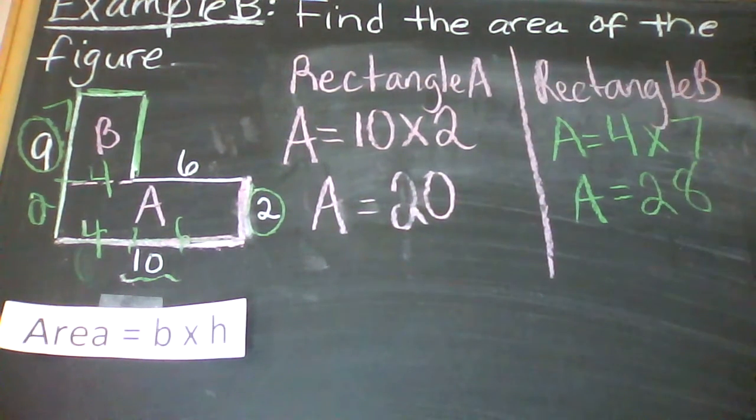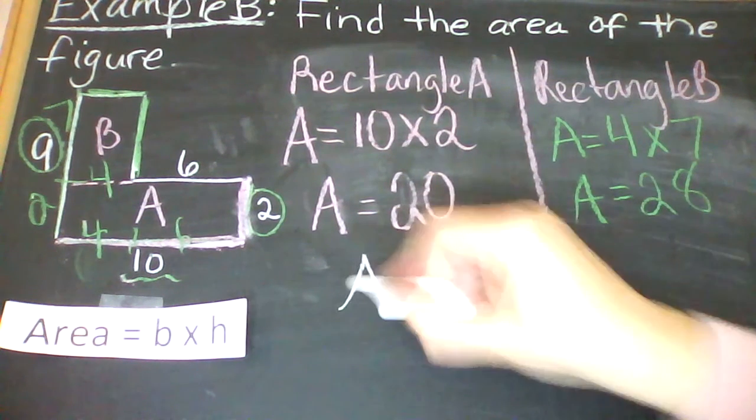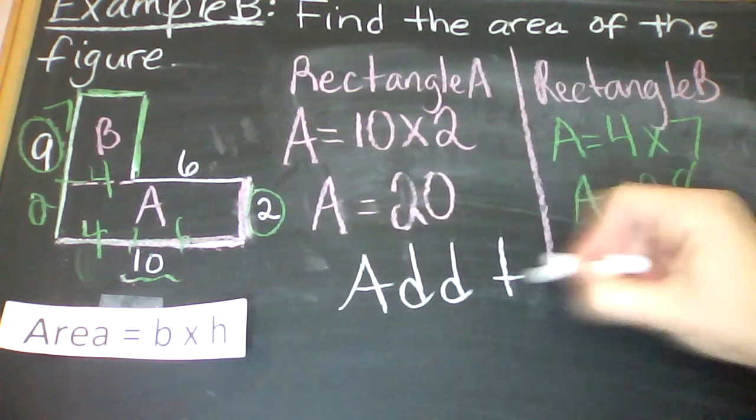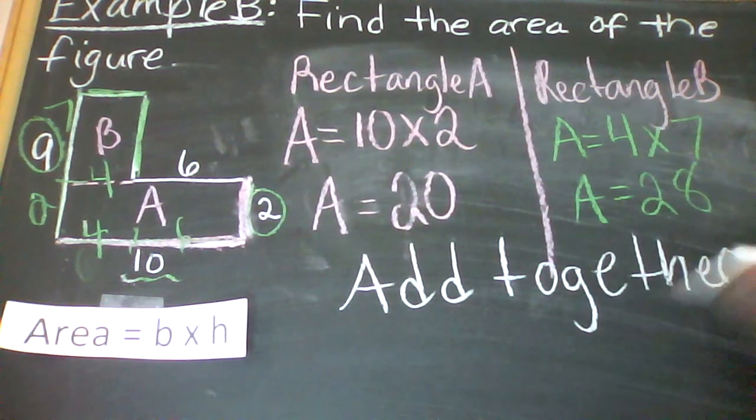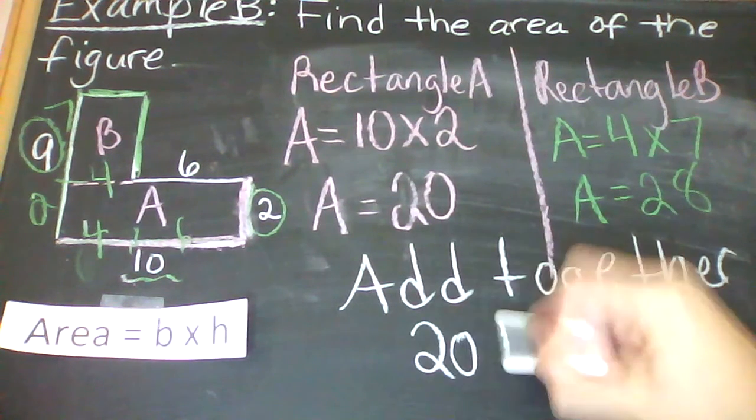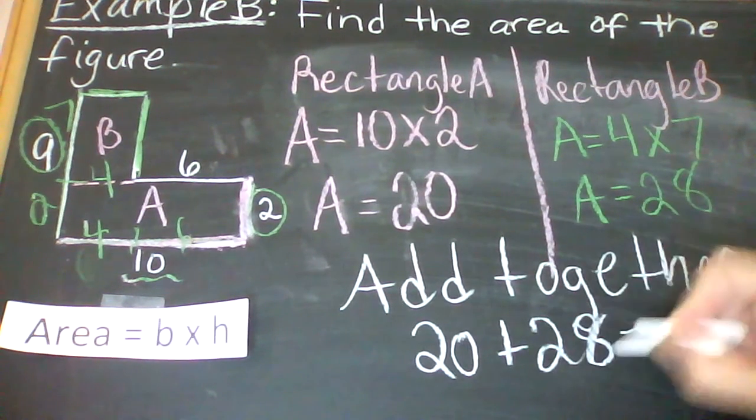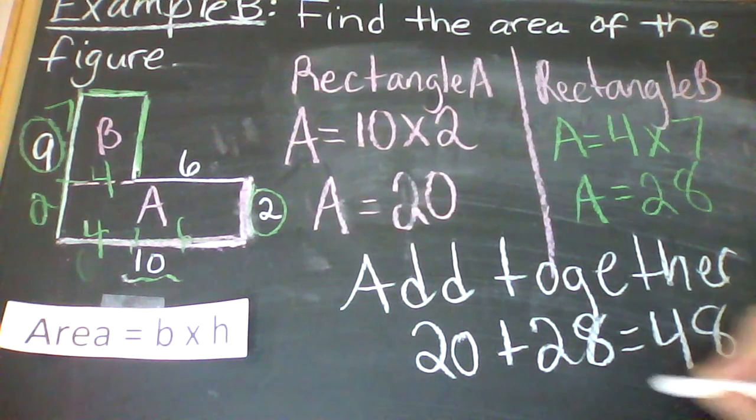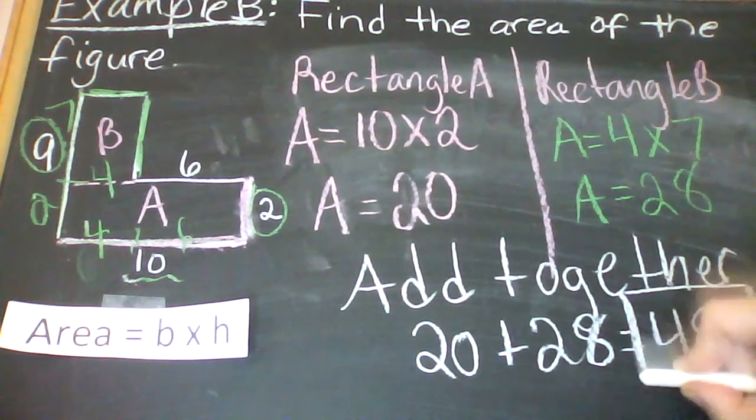So after you find the area of each part, you're going to add them together. So we're going to add these two together, and that will give me my total area. So 20 plus 28 is 48. So my answer for the area of this whole entire figure would be 48.